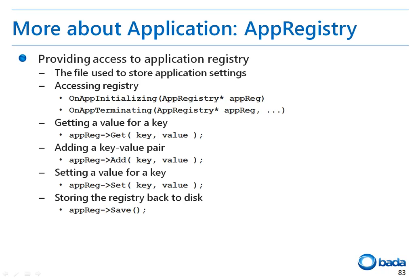I will explain the other classes in the OSP App namespace besides the Application class. There is an AppRegistry class, which is used to read the registry corresponding to the application. The registry is delivered through the parameters of the onAppInitializing and onAppTerminating functions, so registry values can be easily accessed and used. To read the value of a key, the get function can be used. To set a key-value pair, the add function can be used. To set the value of a key, the set function can be used. And to save the changes to the registry, the save function can be used.